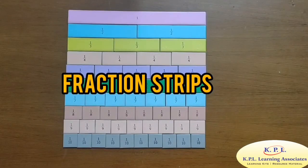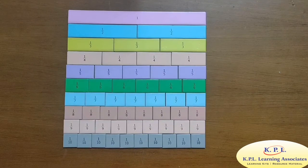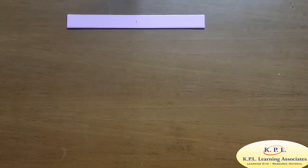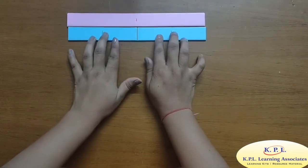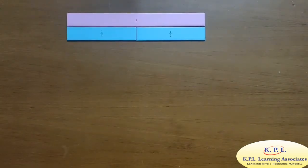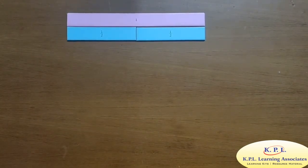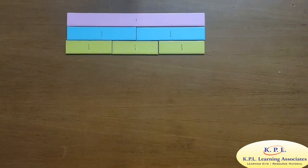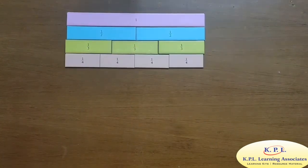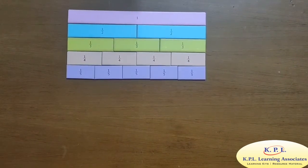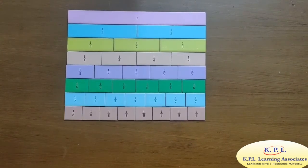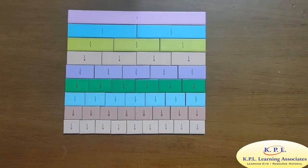The way we learnt the fraction concept with the circular variant, we can also do the same with these fraction strips. This is one strip. Now we are going to divide this strip into two equal parts — each part is known as halves. Now divide this strip into three equal parts — each part is known as one third. Similarly, we can divide this into four, five, six, seven, eight, nine, and ten equal parts.